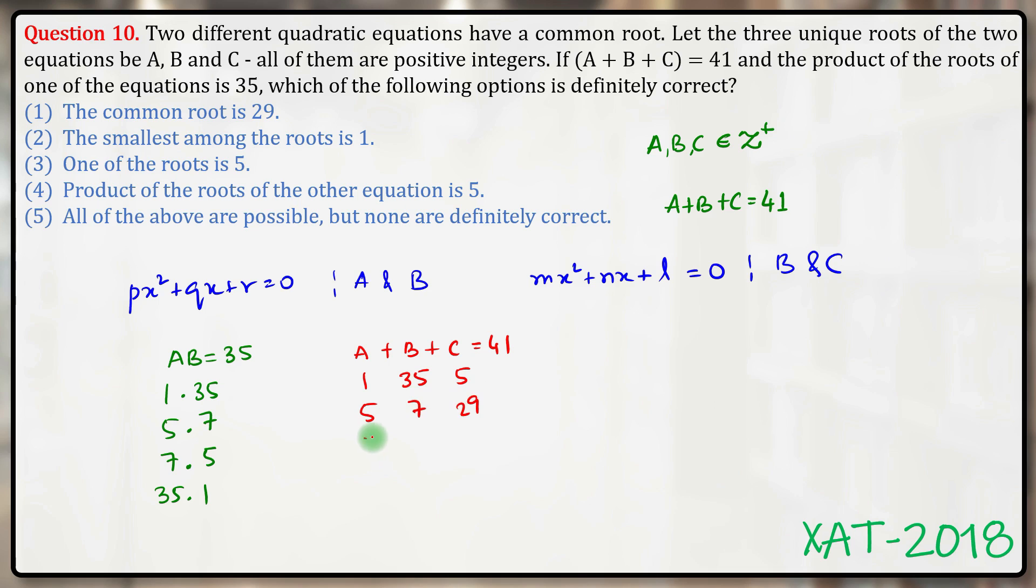If a is 7, b is 5, c must be 29. And those are the only four cases that are possible based on the information given in the question.